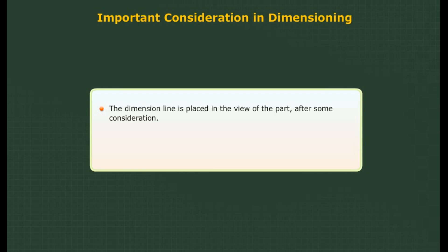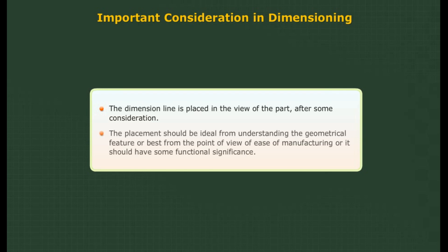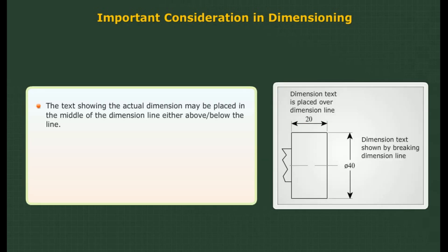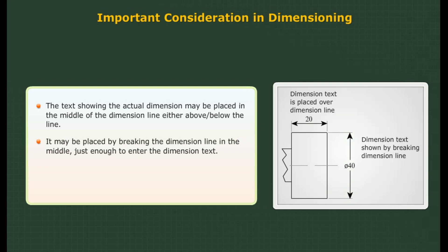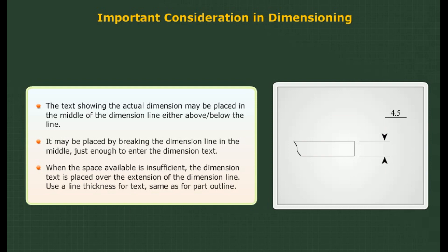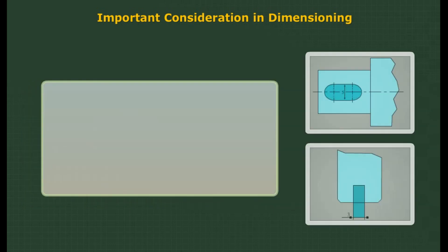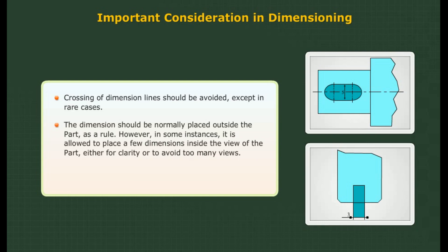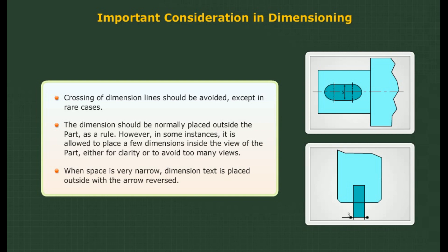Important considerations in dimensioning: The dimension line is placed in the view of the part after some consideration. The placement should be ideal for understanding the geometrical feature, best from the point of view of ease of manufacturing, or of some functional significance. The dimension text may be placed in the middle of the dimension line, either above or below, or by breaking the dimension line just enough to enter the text. When space is insufficient, the text is placed over the extension of the line. Use the same line thickness for text as for part outline. Crossing of dimension lines should be avoided except in rare cases. Dimensions should normally be placed outside the part, though in some instances a few may be placed inside for clarity. When space is very narrow, dimension text is placed outside with the arrow reversed.